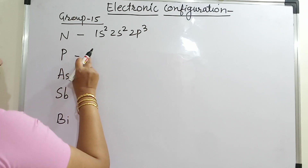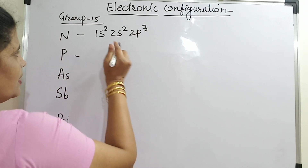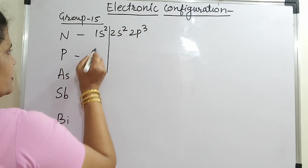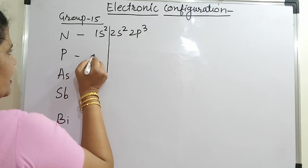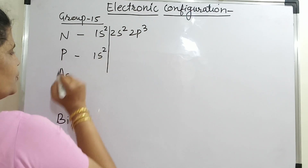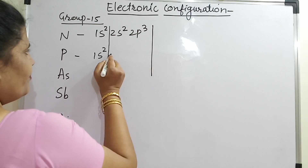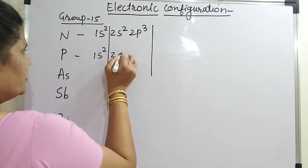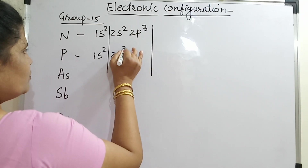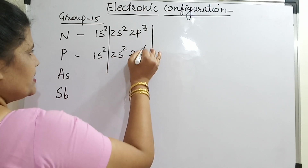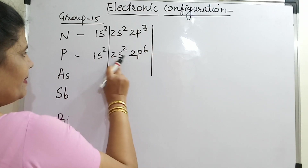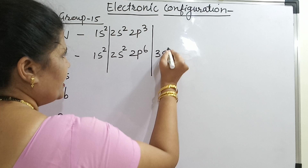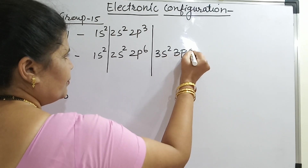For phosphorus, you don't have to count the number of electrons. What you simply have to do is fill the main principal quantum number. I will fill 1s2, then completely fill the second principal quantum number: 2s2 and 2p6. Then I will come to 3s2 and 3p3.